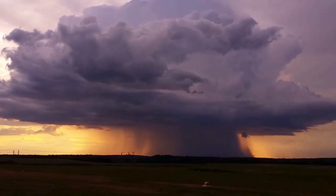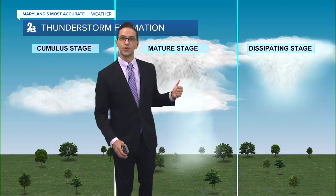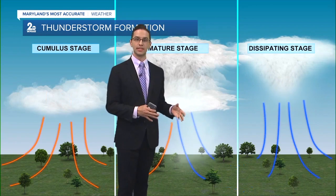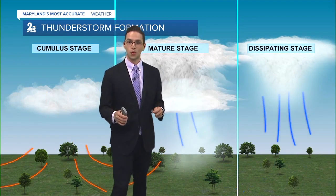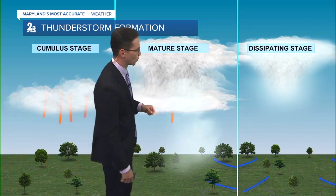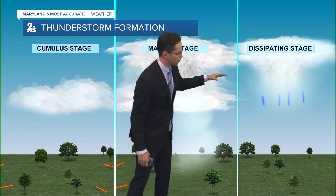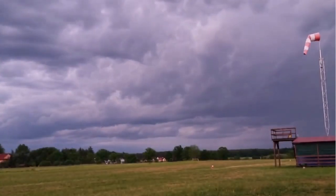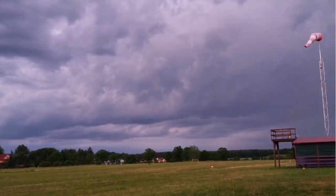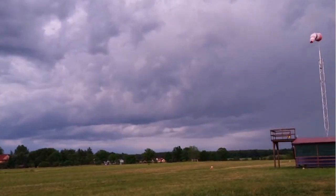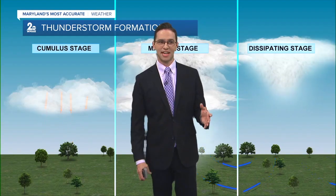That's when you gotta bring it inside. Of course, that can't last forever. Eventually that downdraft, or that colder air, starts to win out. It suppresses any kind of storm development, and then the storm starts to fall apart. That's what we call the dissipating stage.